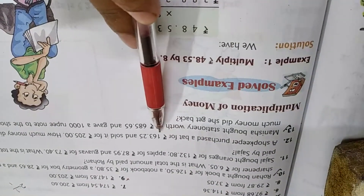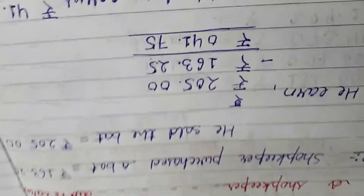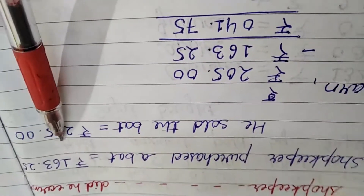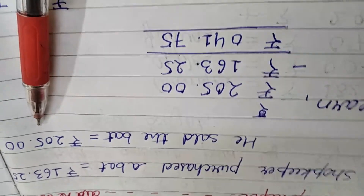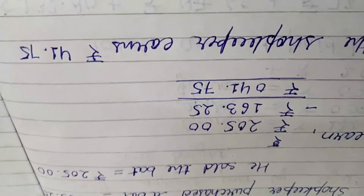Next: A shopkeeper purchased a bag for Rs. 163.25 and sold it for Rs. 205. How much money did he earn? The shopkeeper bought the bag for Rs. 163.25 and sold it for Rs. 205. We will show you how much money he earned by doing a subtraction. Now let us start Exercise number 68.